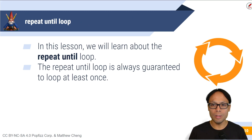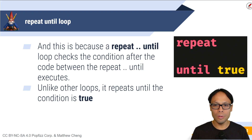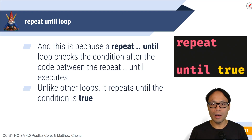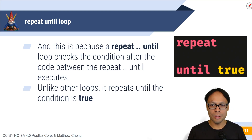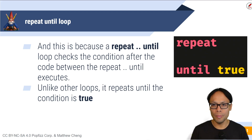The repeat until loop is always guaranteed to loop at least once. This is because in the repeat until loop, it checks the condition after the code between the repeat and until is executed. Unlike other loops, it repeats until the condition is true.